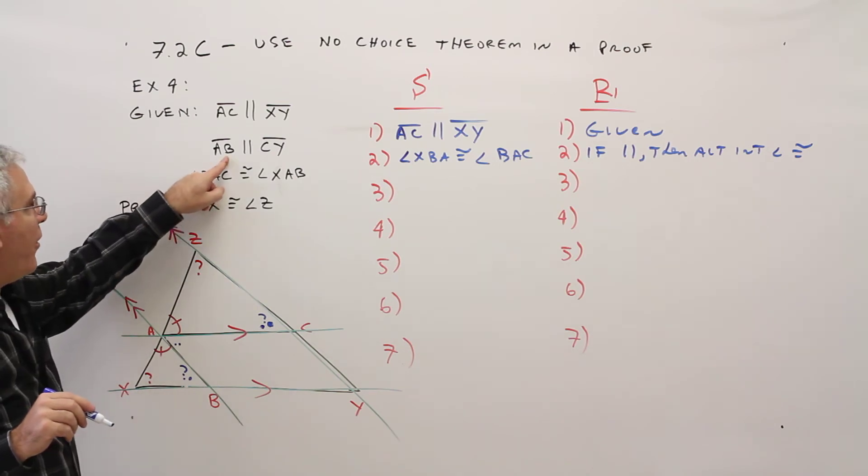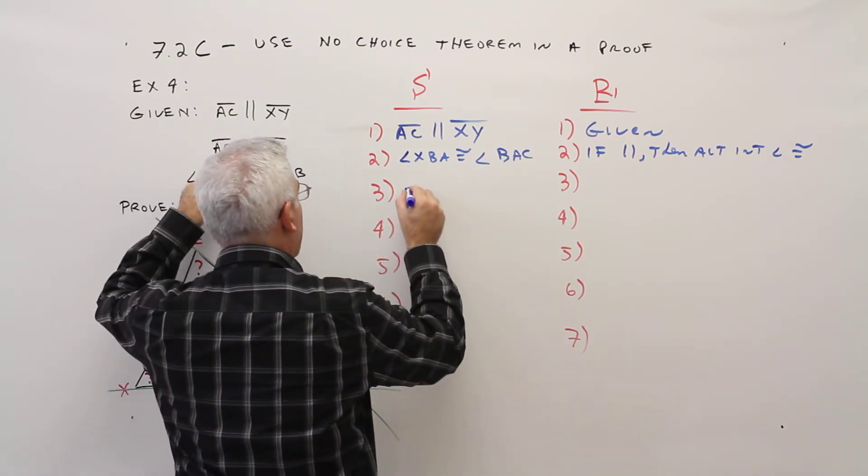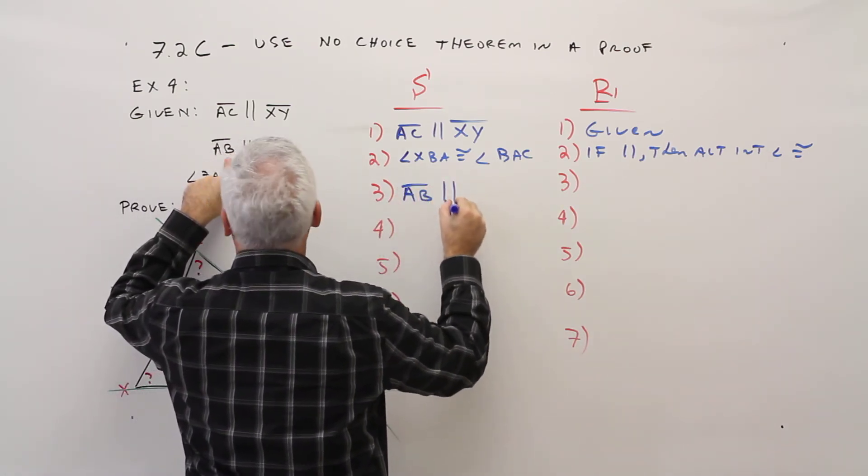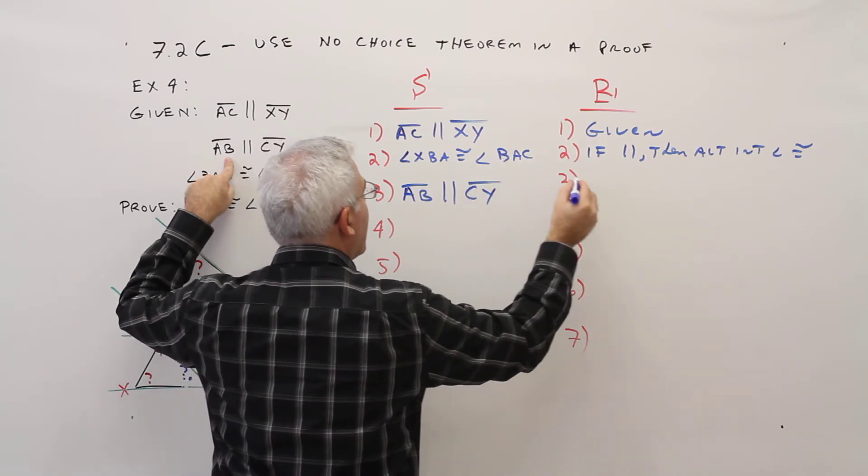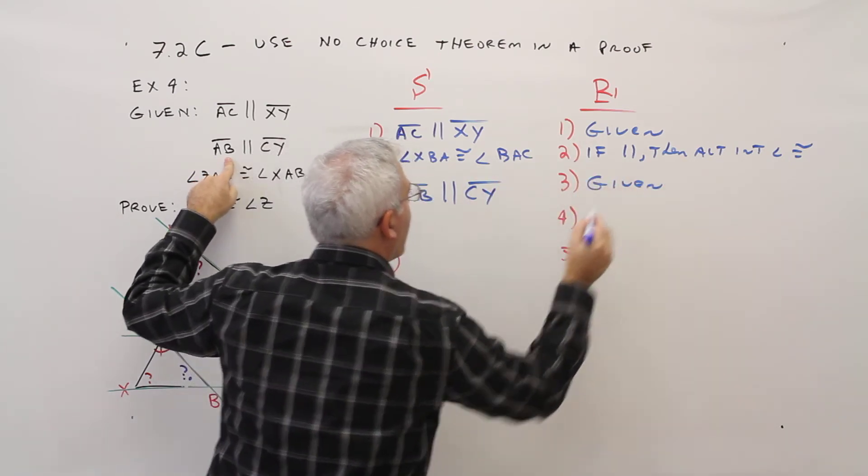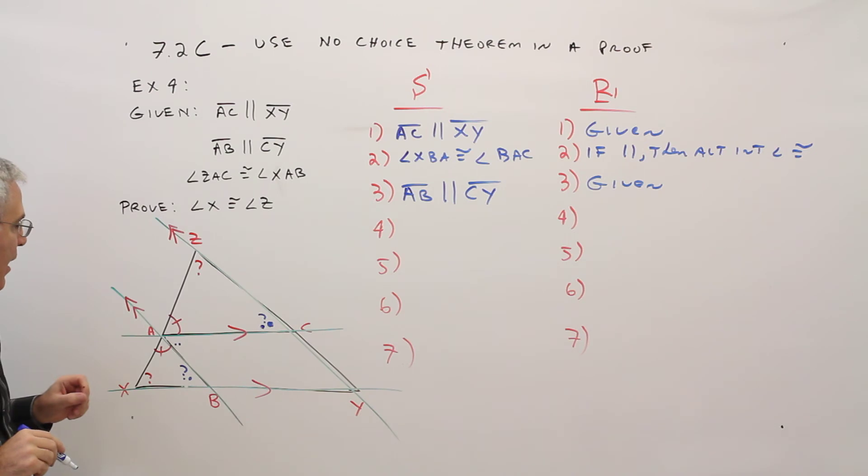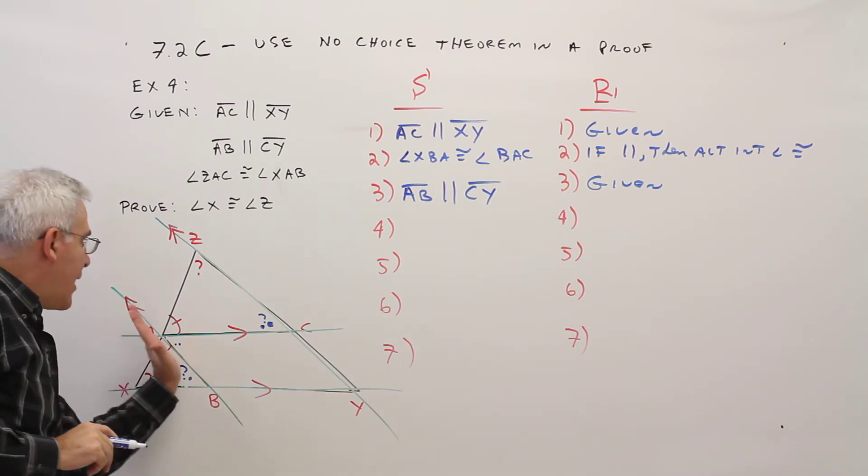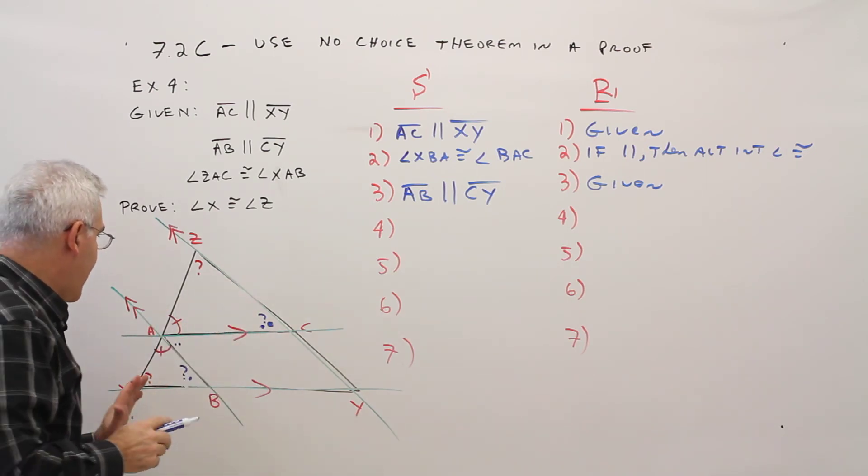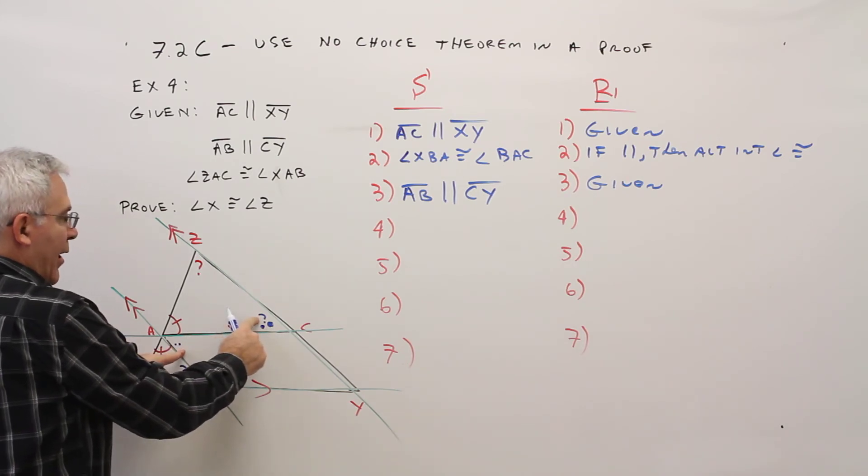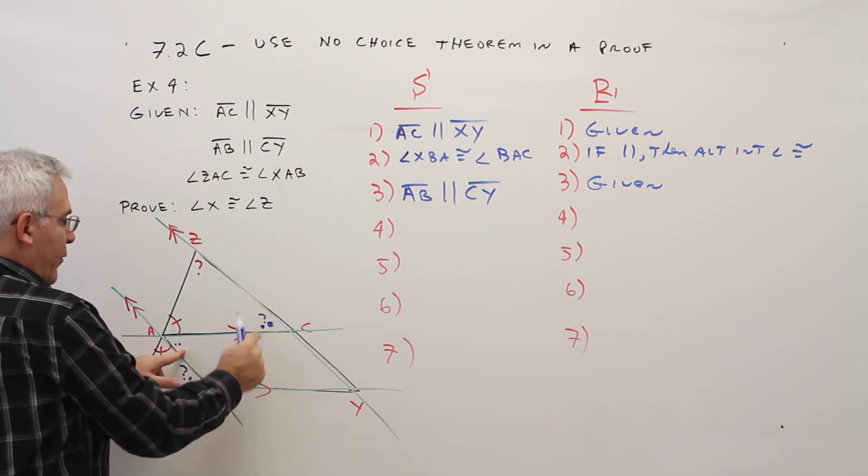So then I'm going to use the other parallel. AB is parallel to CY. That was given. And again, if AB is parallel to CY, then I'm going to have these being the alternate interior angles.